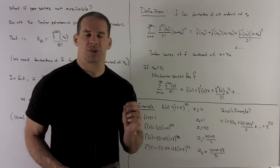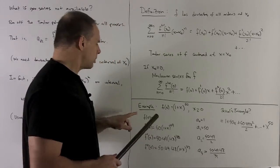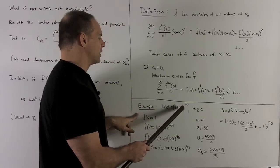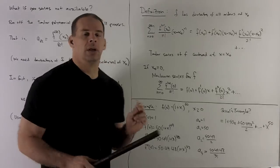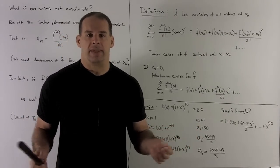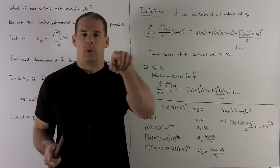So let's look at an application. Suppose I have f of x equal to 1 plus x raised to the 50th power. If I wanted to expand this, what would we do? We would go to Pascal's triangle,